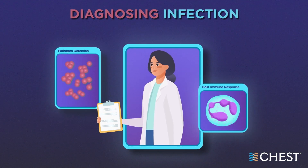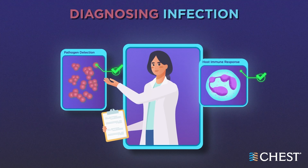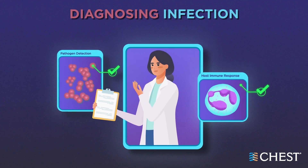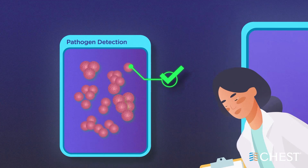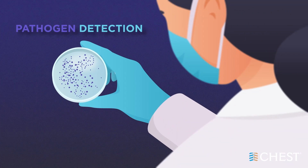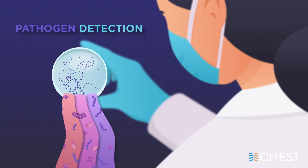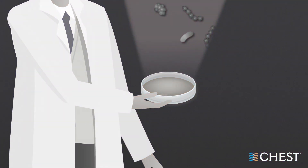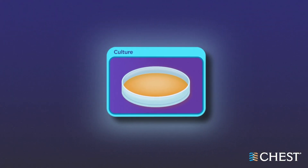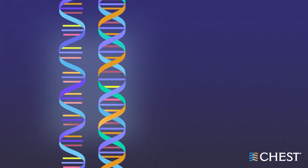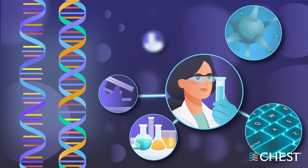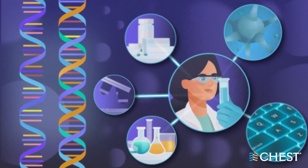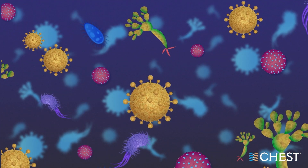Pathogen detection and host immune response are more reliable methods to detect whether an infection is present. Cultures are the traditional method for demonstrating the presence of infection, but cultures are slow and rely on techniques that are more than a century old. Molecular diagnostics are faster and rely on the detection of DNA, RNA, or proteins that are manifest when bacteria, viruses, or fungi are present.